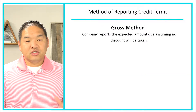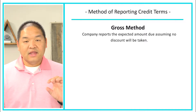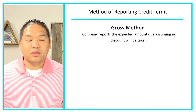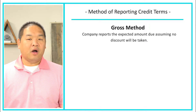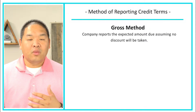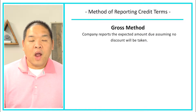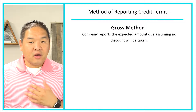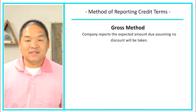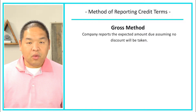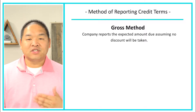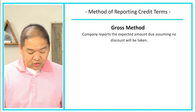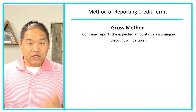The gross method is used when a company reports the expected amount due assuming that the discount will not be taken. Maybe it's just policy that the company waits until the invoice is due to pay, rather than taking advantage of the discount. If they don't expect to take the discount, then they should report how much is owed based on not taking the discount.